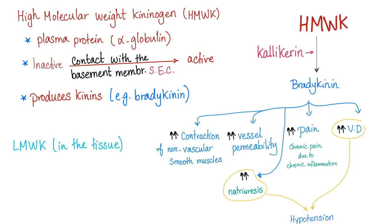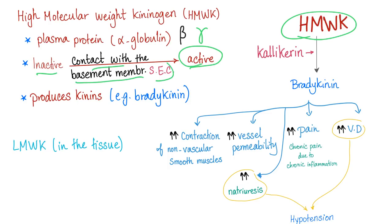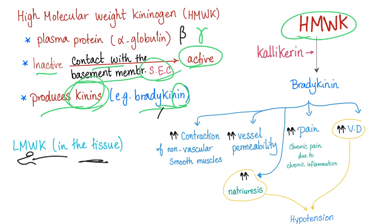Is it alpha, beta, or gamma globulin? It's an alpha globulin — not to be confused with the coagulation factors, which are beta globulins, and not to be confused with immunoglobulins, also known as antibodies, which are gamma globulins. High molecular weight kininogen, when inactive, is activated when it comes in contact with the basement membrane — the subendothelial collagen. It produces bradykinin, which is one of the kinins. Low molecular weight kininogen is in the tissue; high molecular weight kininogen is in the plasma.